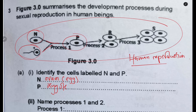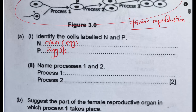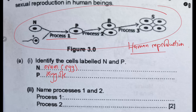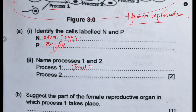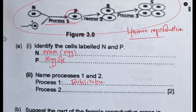The zygote is simply the fertilized egg. Process one is fertilization. Fertilization in simple terms is the fusion of the nuclei of the ovum and the sperm to produce a zygote. You also need to know how to define fertilization. For process one, the answer is fertilization — the one that results in the formation of the zygote.